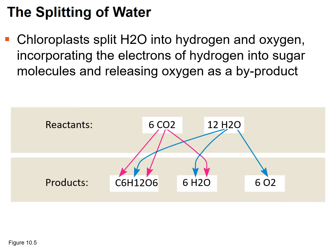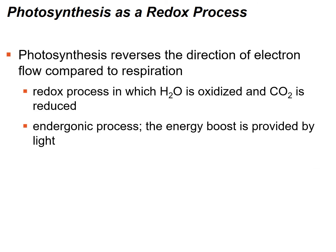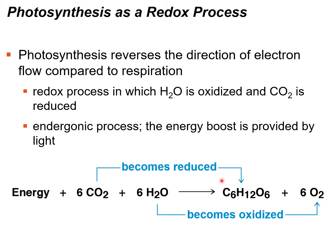Photosynthesis is a redox process similar to aerobic respiration but in reverse. Water is oxidized and carbon dioxide is reduced. To track reduction, look for the addition of hydrogens — carbon dioxide has no hydrogens, but the carbons gain hydrogens to form glucose. So carbon dioxide is reduced and water is oxidized. Since this is endergonic, energy must be input, coming from light. You can see hydrogens added to CO2 and lost from water in this process.